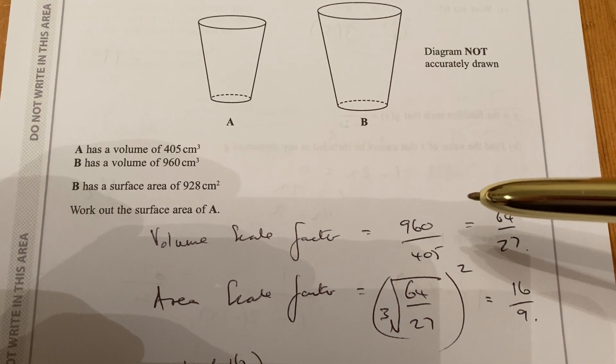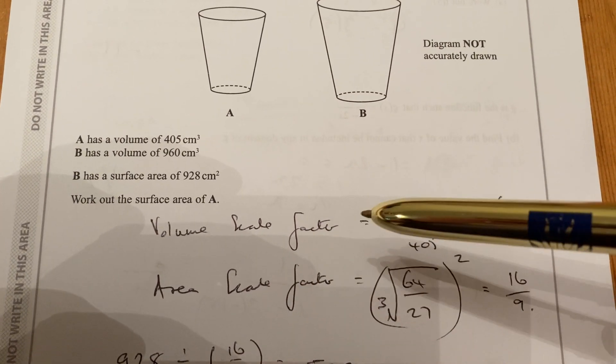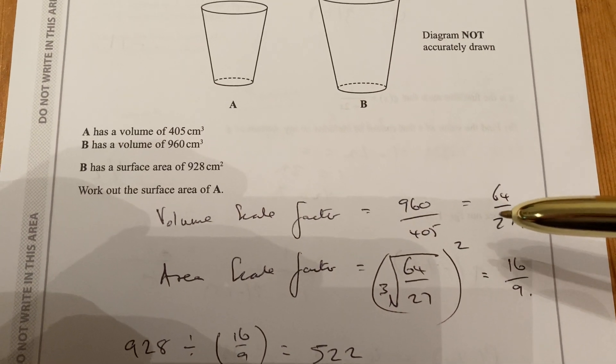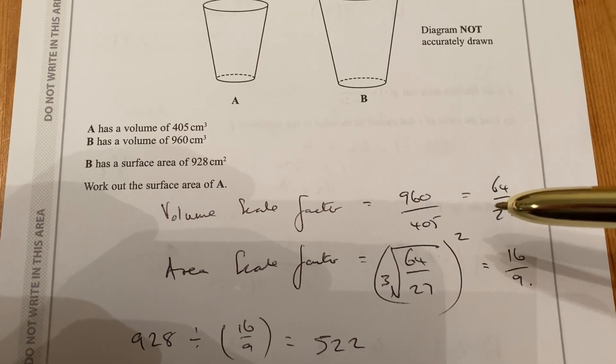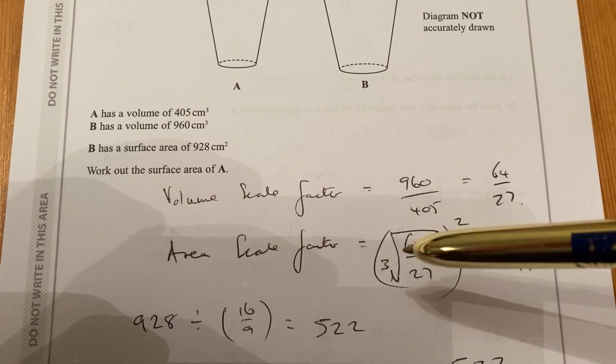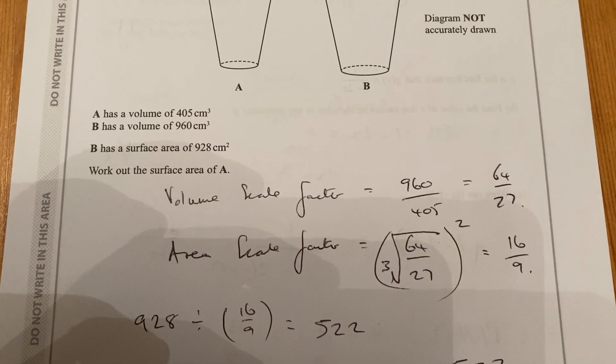Now that is the volume scale factor. To get the area scale factor, you would need to do two things. You need to cube root the volume scale factor to get the length scale factor, and then square it to get the area scale factor. So the 64 over 27 needs cube rooting and then squaring.